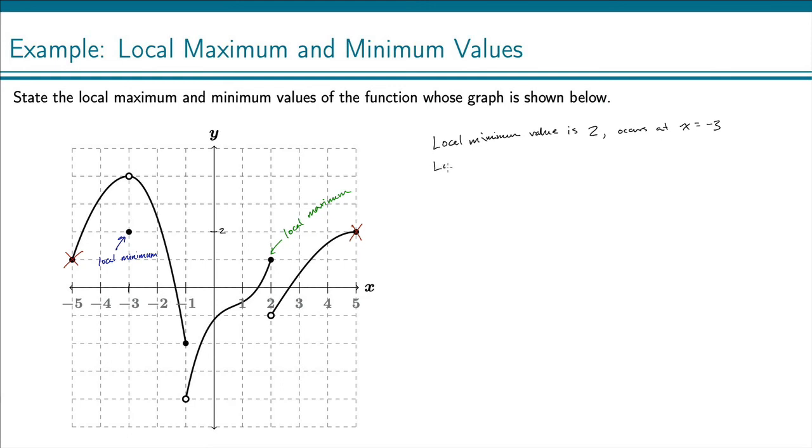And then for our local maximum value, this point right here has a y value of 1. So it's 1, and that occurs at x equals 2.